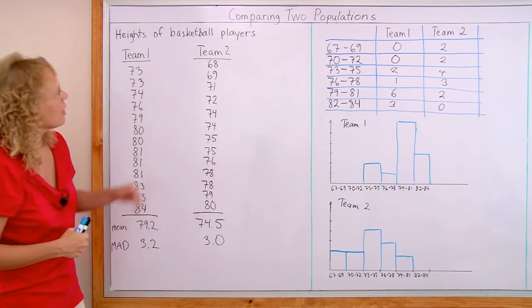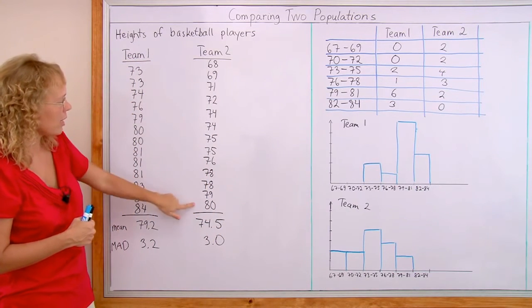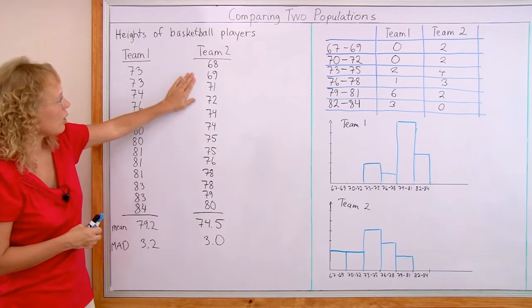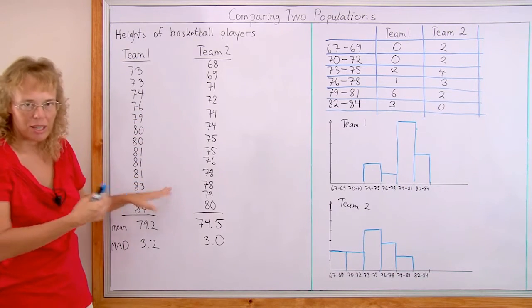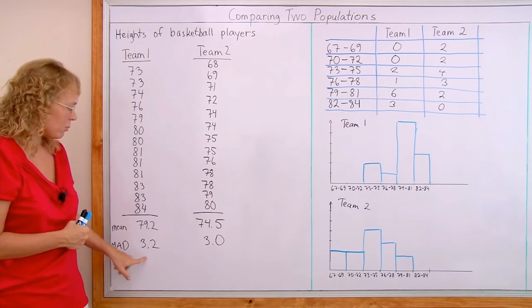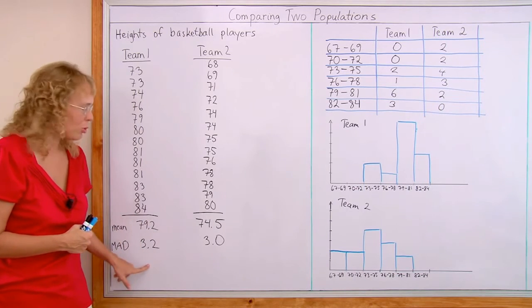What this means is that the range, 68 to 80, the range, 73 to 84, is similar. And also how the player heights are spread out within the range is sort of similar in both data sets, as shown by these two numbers being close together.